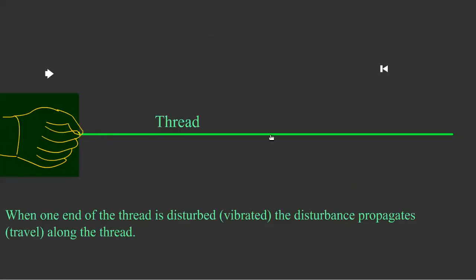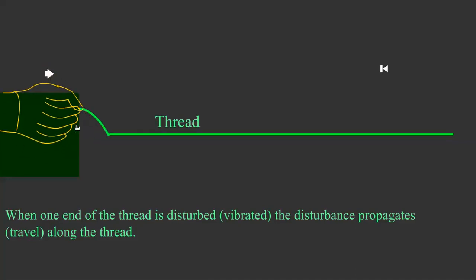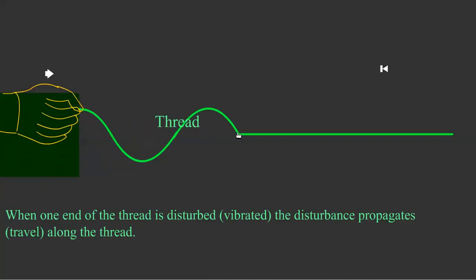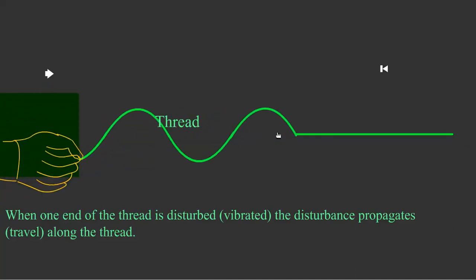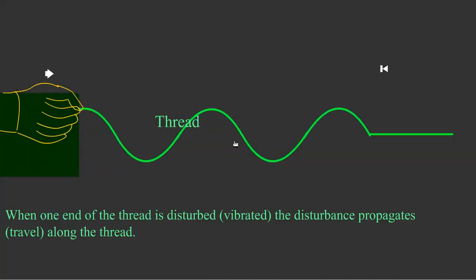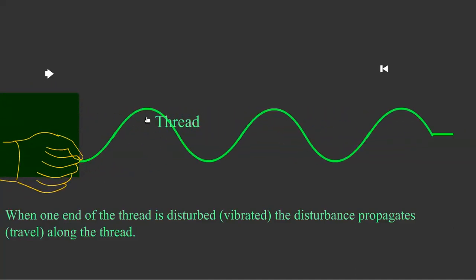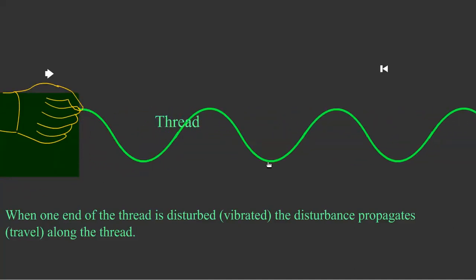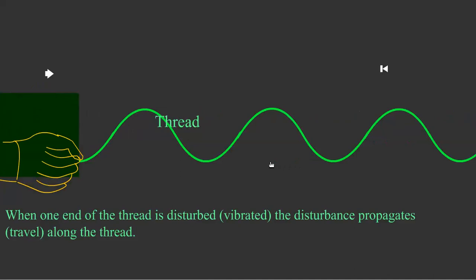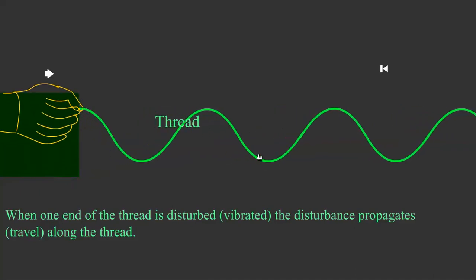Consider a thread held with one hand. When one end of the thread is disturbed, the disturbance propagates along the thread. These ups and downs are known as waves.